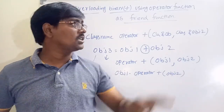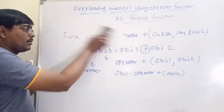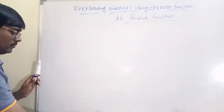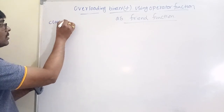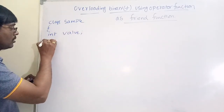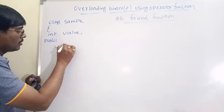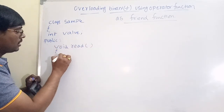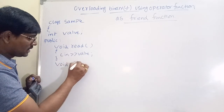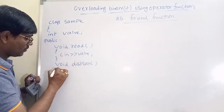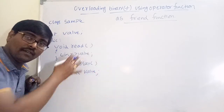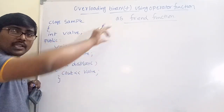Now we will consider the same example we discussed with the member function, but now using a friend function. Class sample contains int value, public section with a void read() function to read the value, and a void display() function to display the value.